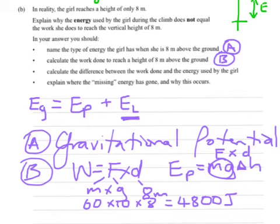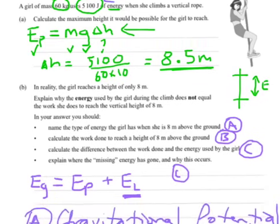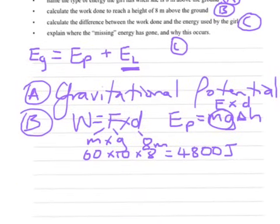Calculate the difference between the work done and the energy used by the girl. The work done and the energy used by the girl. At the top, it said 5,100 joules of energy, which is right there. But the work done by the girl was only 4,800.